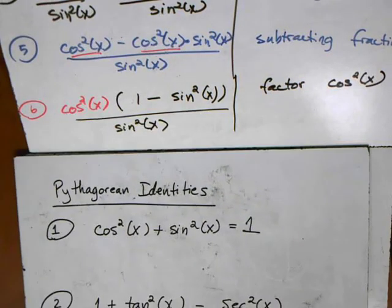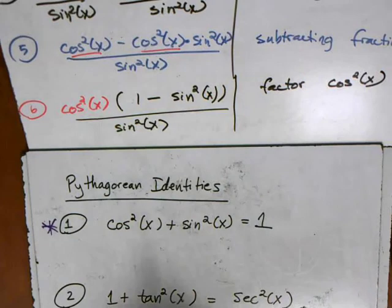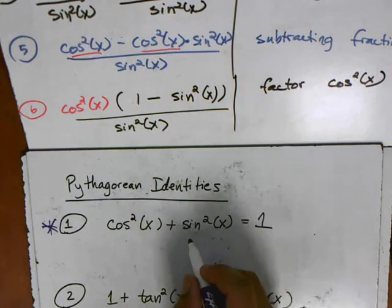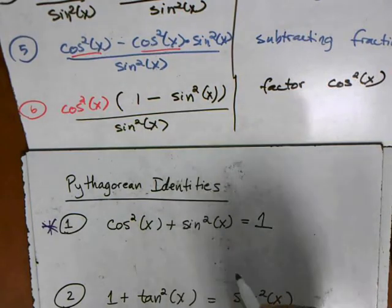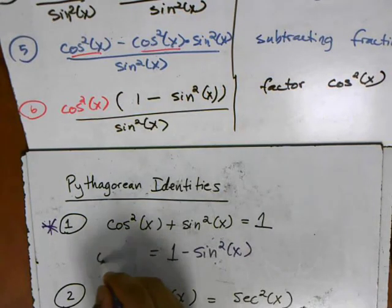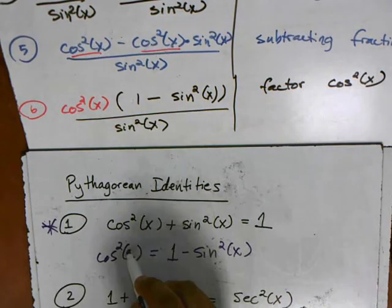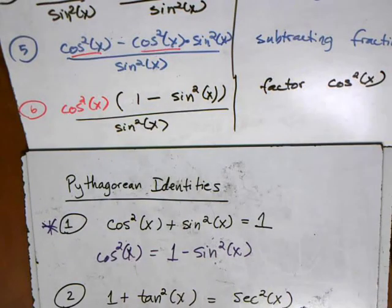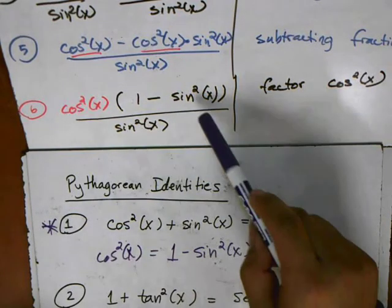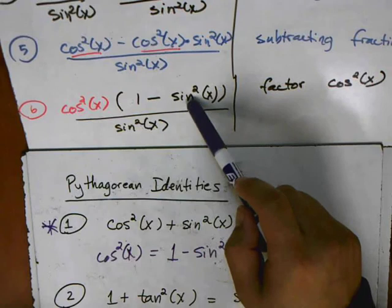Before we go further, I want to remind everybody about the Pythagorean identities that we have at our disposal. One of the Pythagorean identities — in fact, the first one — says that cosine squared plus sine squared equals one. We can rework this identity: I can subtract sine squared from both sides, so I can say that one minus sine squared is equal to cosine squared. That comes from taking this Pythagorean identity and doing a little algebra with it. You can see that the expression in our proof is the same, so we can substitute cosine squared in there.